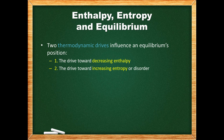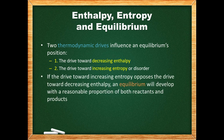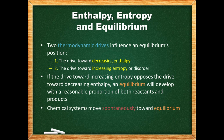For a chemical reaction, if both of these drives are towards the products, the reaction will establish an equilibrium position far to the right. If the drives are both towards reactants, the equilibrium position is far to the left. If the drive towards increasing entropy opposes the drive towards decreasing enthalpy, an equilibrium will develop with a reasonable proportion of both reactants and products. Note that chemical systems move spontaneously towards equilibrium. Spontaneous means that it happens on its own with no outside intervention — it does not say anything about how quickly it will happen. It should also be emphasized that the College Board prefers the term thermodynamic favorability to spontaneity.